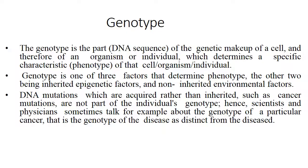The first and foremost thing, let us see what is genotype. Genotype is part of the genetic makeup of a cell and therefore of an organism or individual which determines a specific character or phenotype of that cell or organism or individual. Genotype is one of the three factors that determine phenotype, the other two being inherited epigenetic factors and non-inherited environmental factors. DNA mutations which are acquired rather than inherited, like cancer mutations, are not part of the individualized genotype. Hence, scientists and physicians sometimes talk about the genotype of a particular cancer — that is, the genotype of the disease as distinct from the diseased.